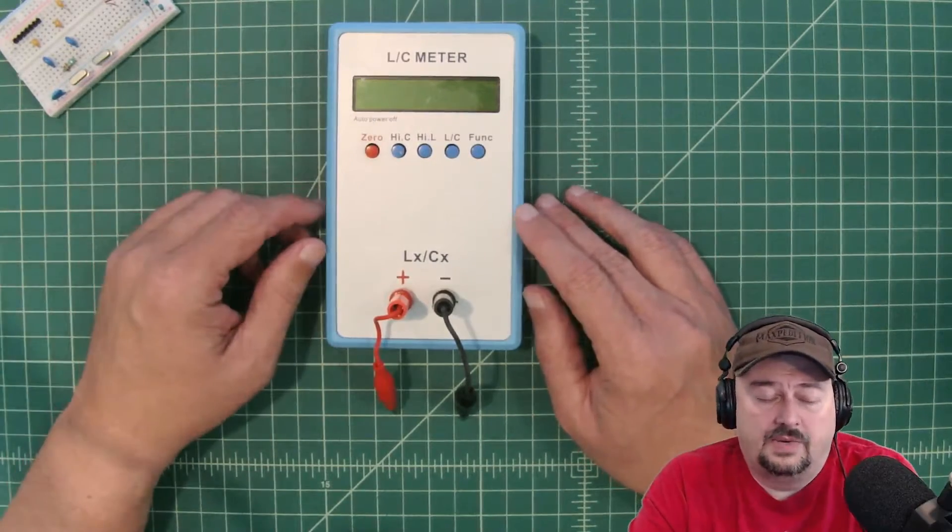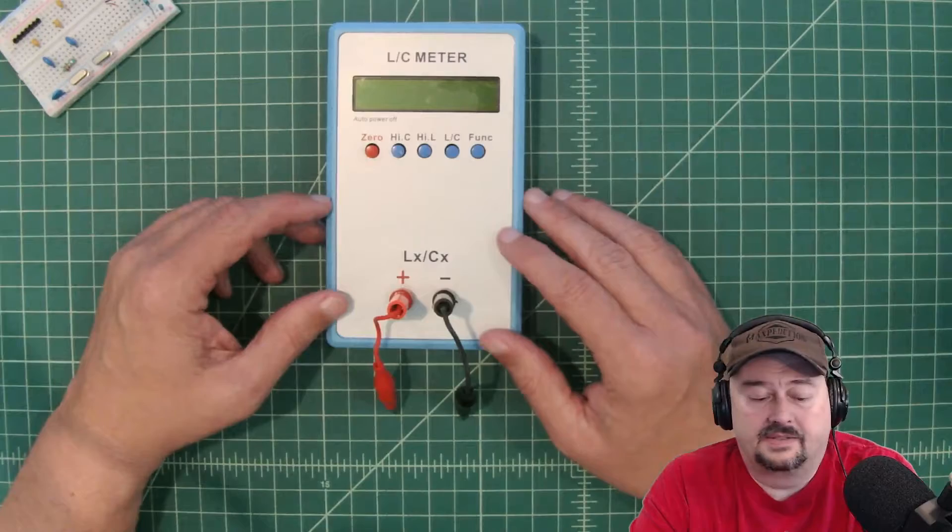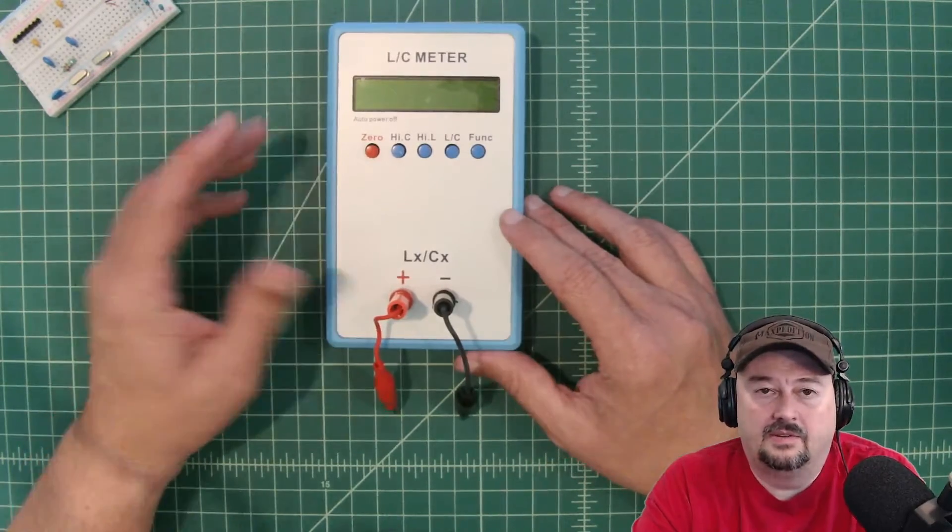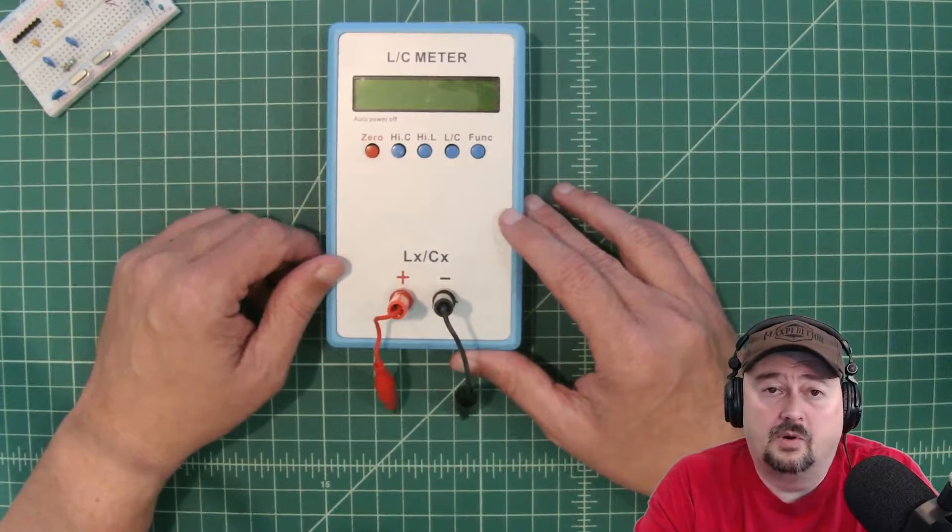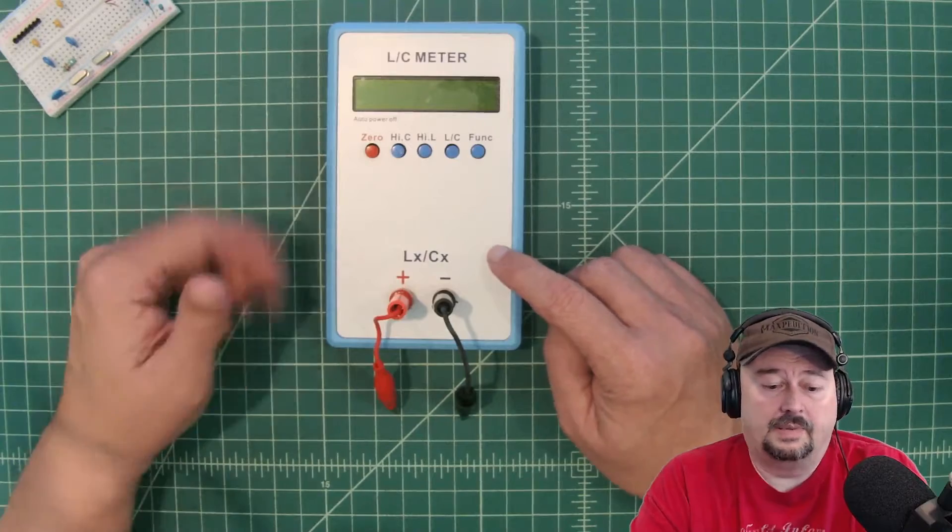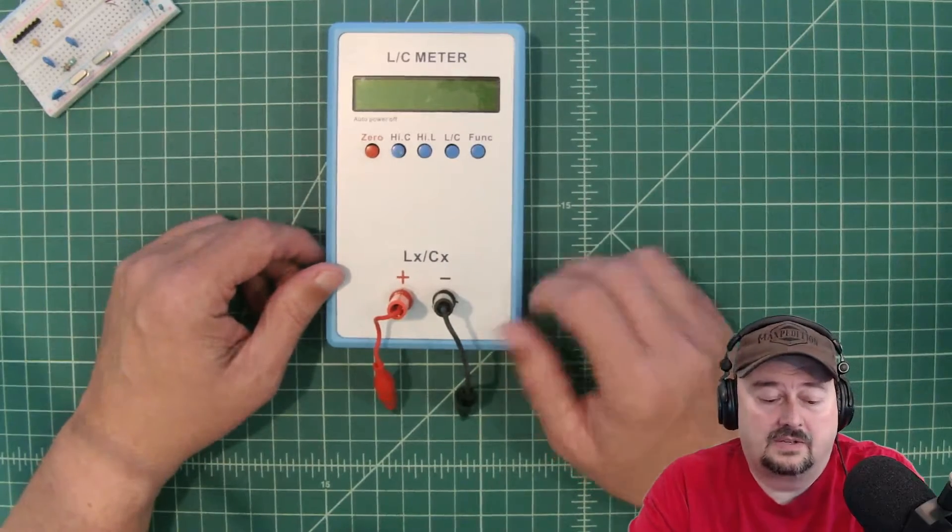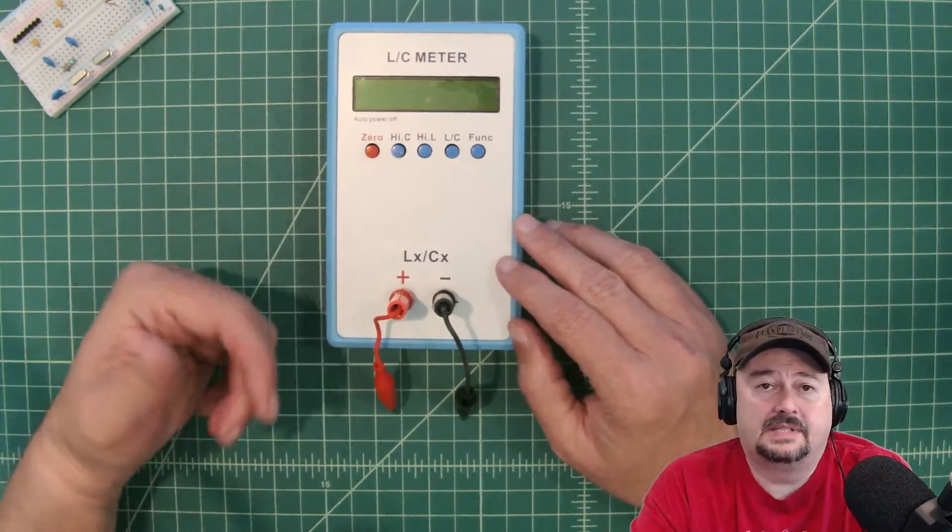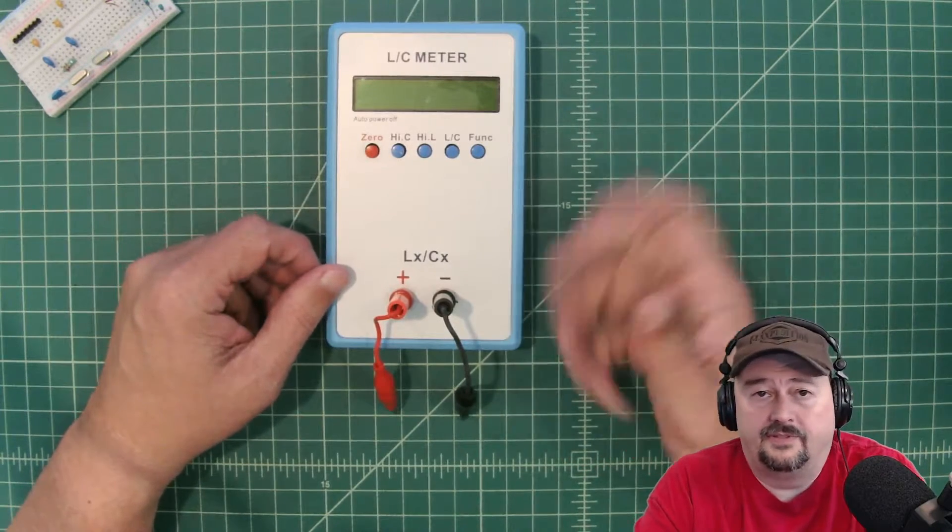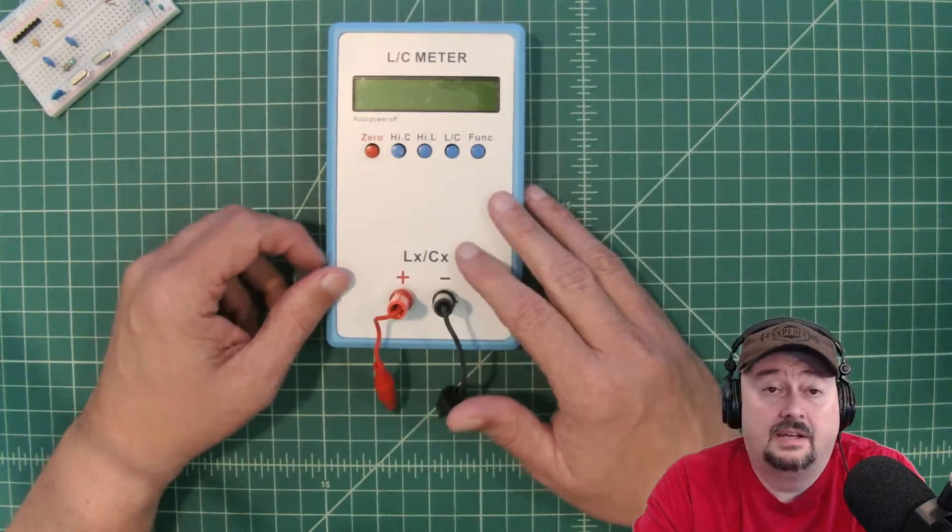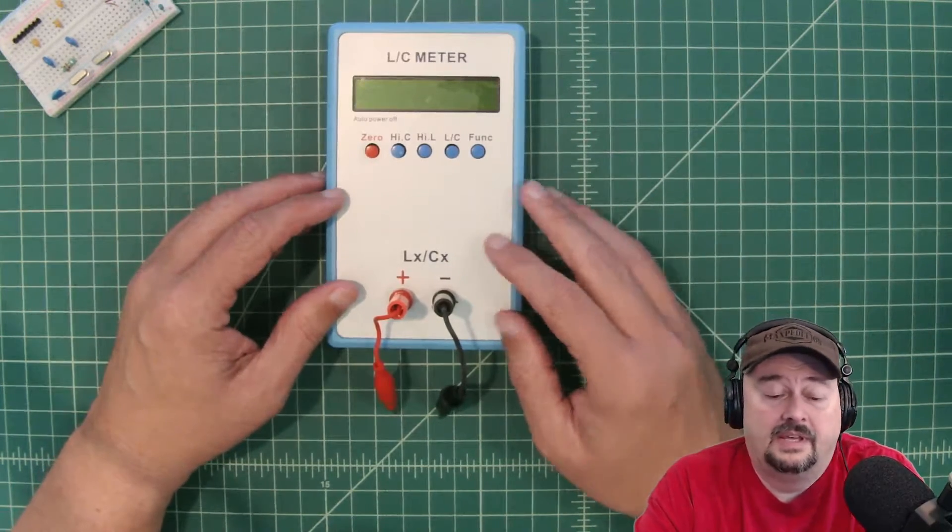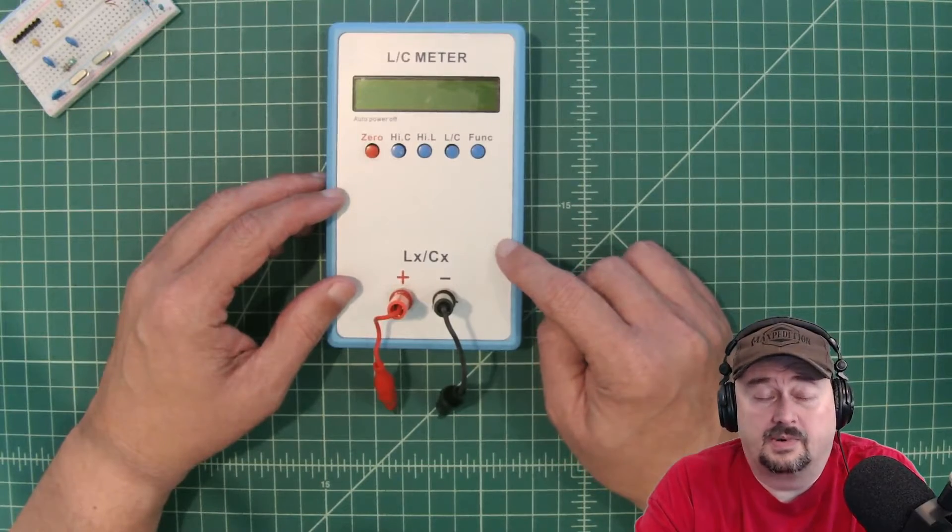So with a meter like this, we measure inductors and capacitors, and we do that when we're making things with electronics and we need to know the values of these particular components. Where this really comes in handy for people like us, ham radio enthusiasts, are when we build antennas, and sometimes these antennas have inductors and capacitors in them. Or we might be building filters or traps or something like that, or even doing kit building where we have to put capacitors and inductors in the kit. So something like this is super duper helpful.